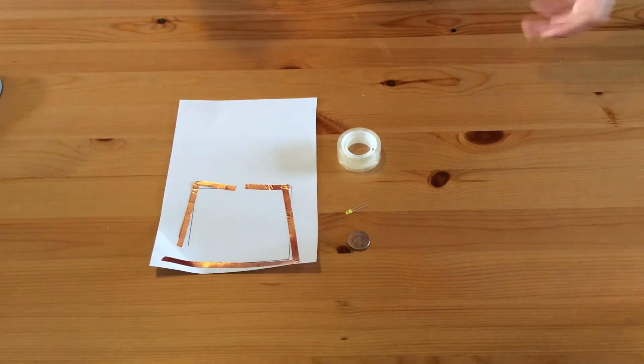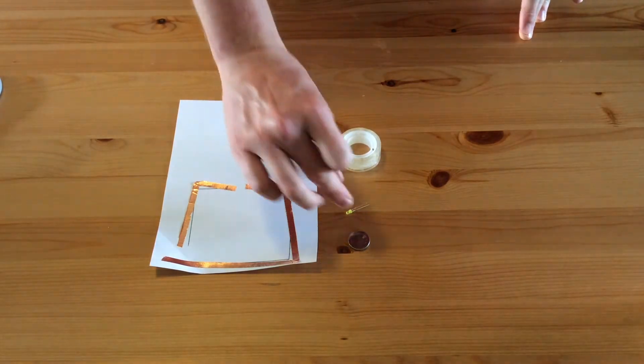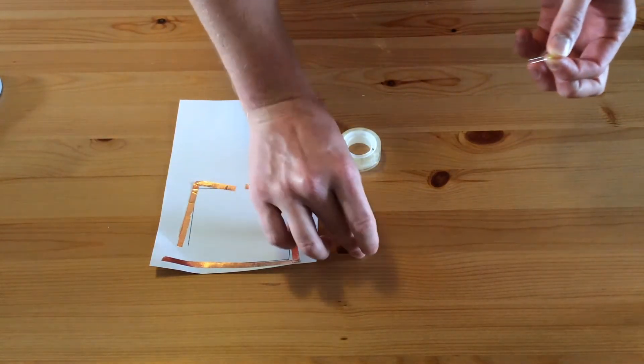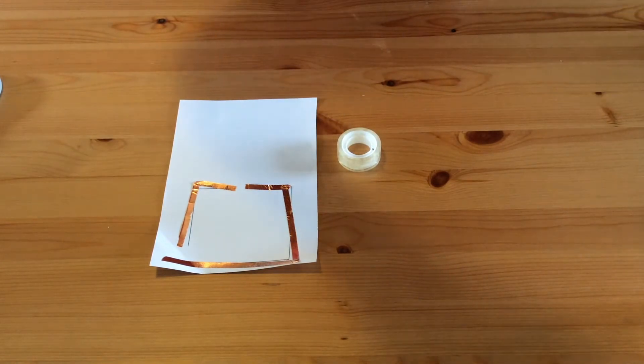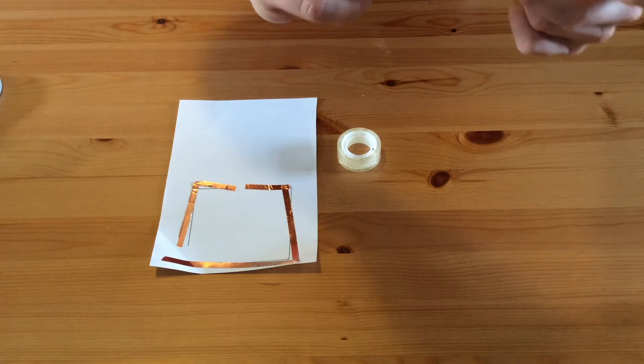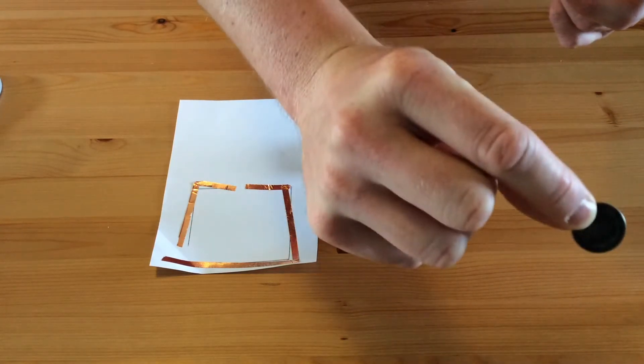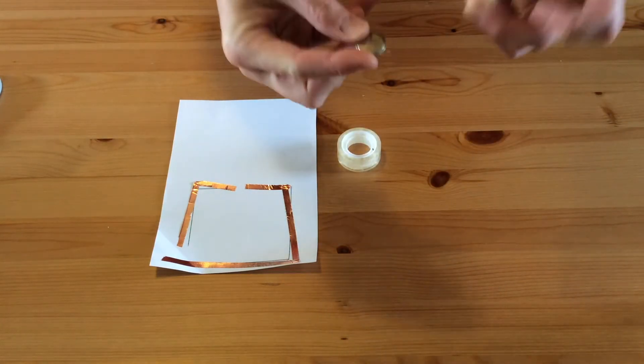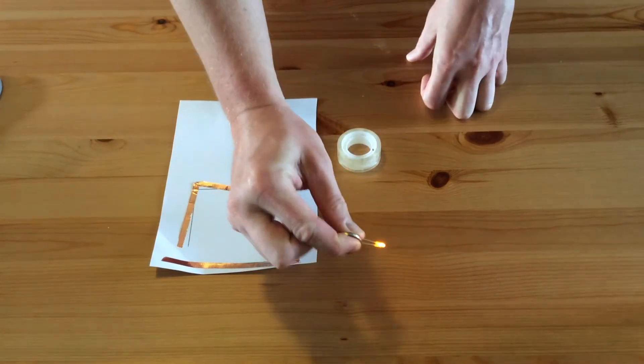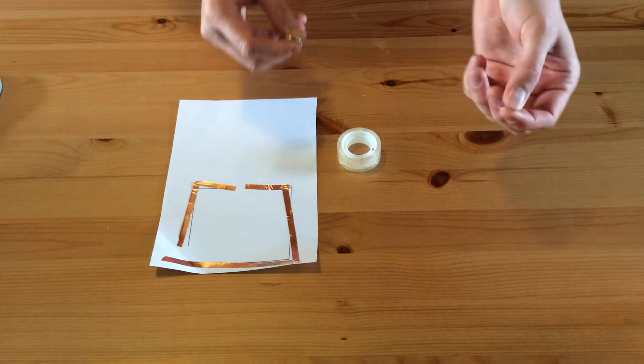The last part of making a paper circuit is to put the light and the battery in. It would be a good idea to check the battery. When you're checking with the coin cell battery and the light, you want the long end to be touching the positive on the top and the short end to be touching the negative on the bottom. See how it lights up there, so we know both things work.